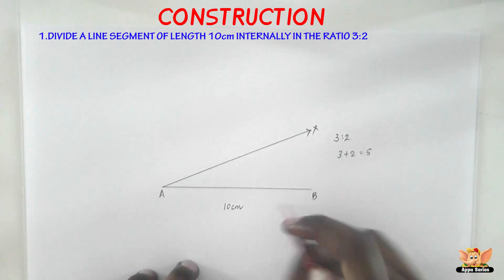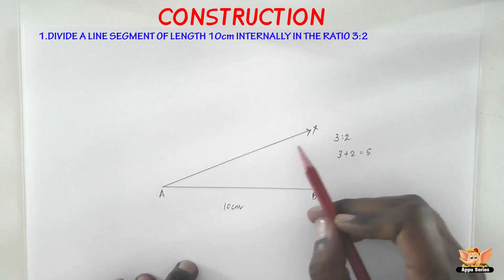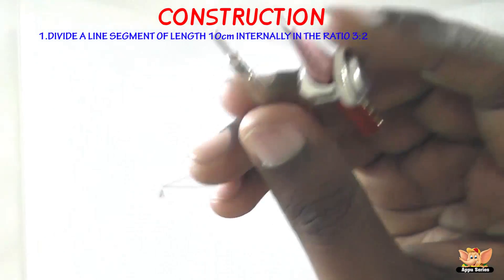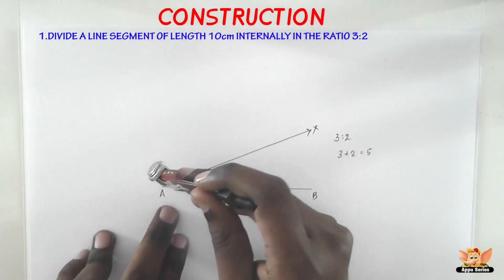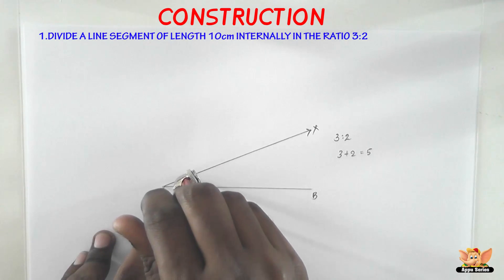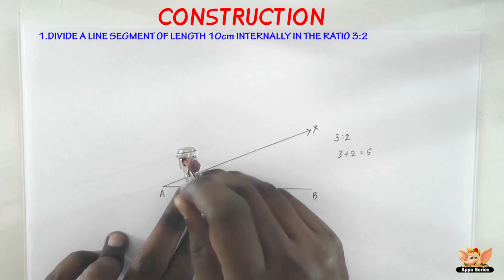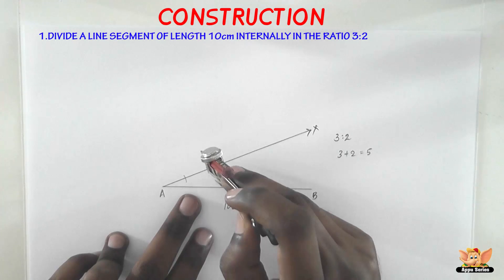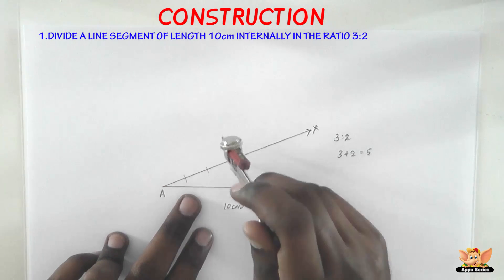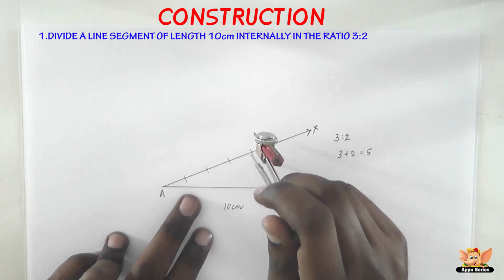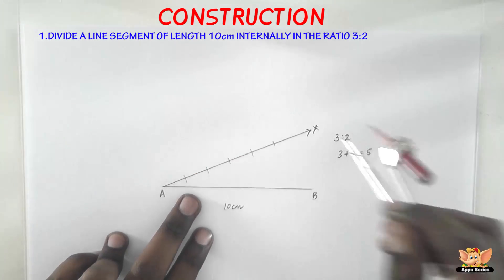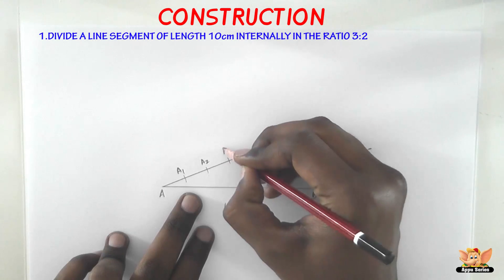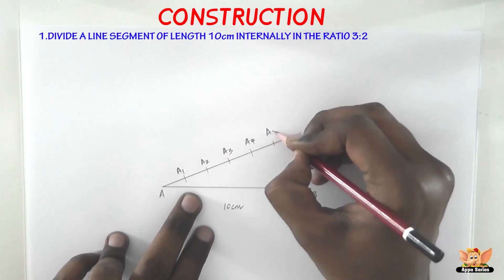Now let's divide the ray AX into 5 parts of any random equal length. Take some length on the compass and start cutting arcs on the line AX until you've done 5 arcs — 1, 2, 3, 4, and the fifth one is here. Let's name these A1, A2, A3, A4, and A5.